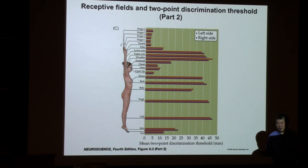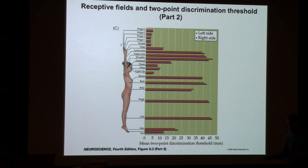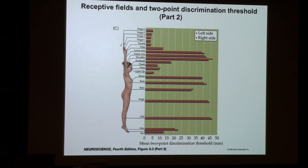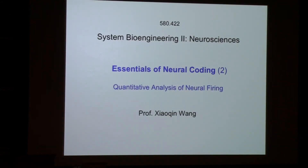People do have a right-hand and left-hand difference in motor movement — about 70 percent of the population is right-handed, 25 to 30 percent left-handed, and some are mixed. But that motor system lateralization has not been shown to apply to the threshold of skin sensation. Good question. Now let us move to how we quantify neural firing.